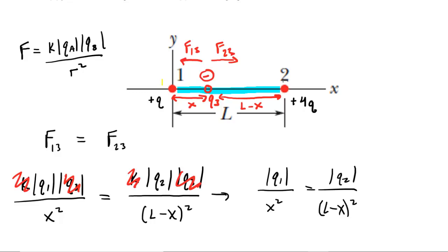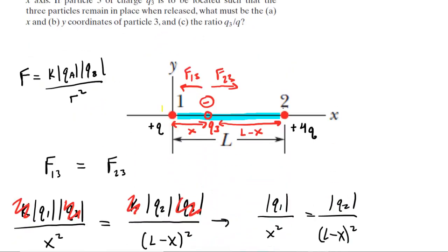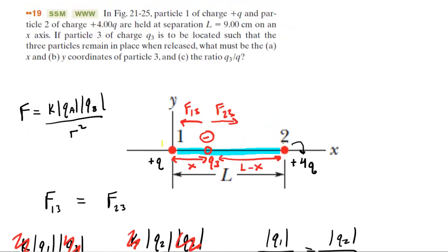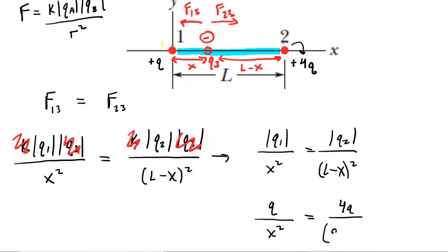We can begin to fill in numbers. Q1 was equal to positive Q, so we fill in Q over x squared. Q2 was equal to positive 4Q, so the right side is 4Q over (L minus x) squared. We also know L equals nine centimeters, giving us Q over x squared equals 4Q over (9 cm minus x) squared.